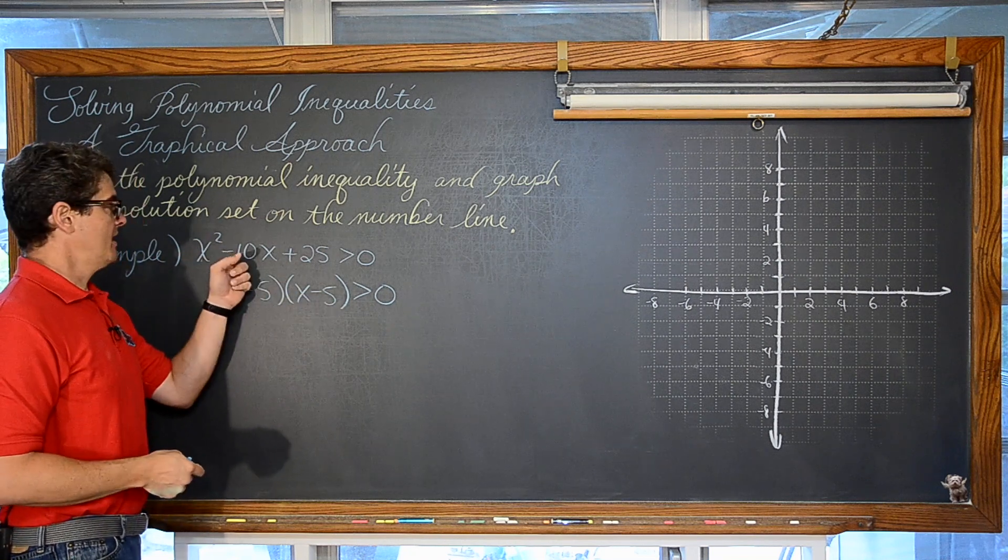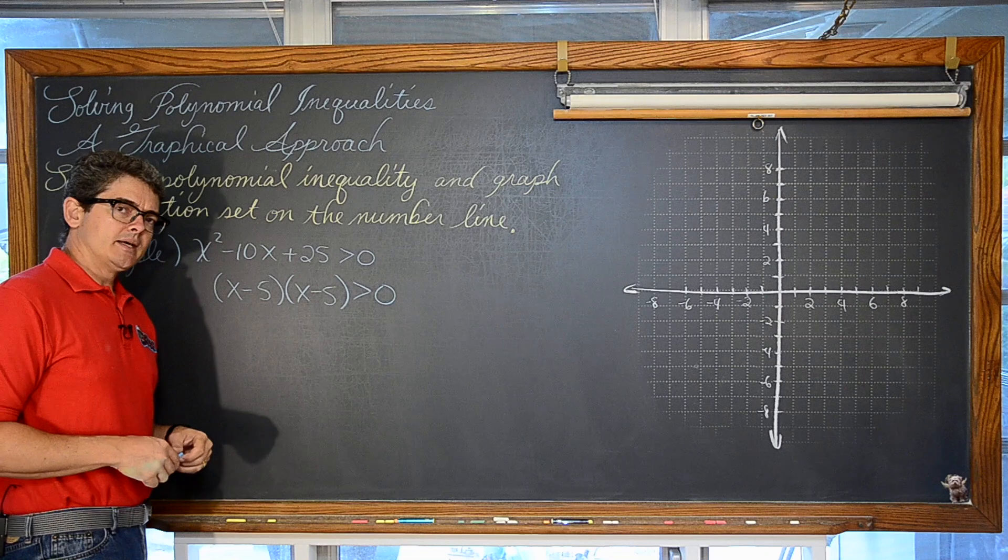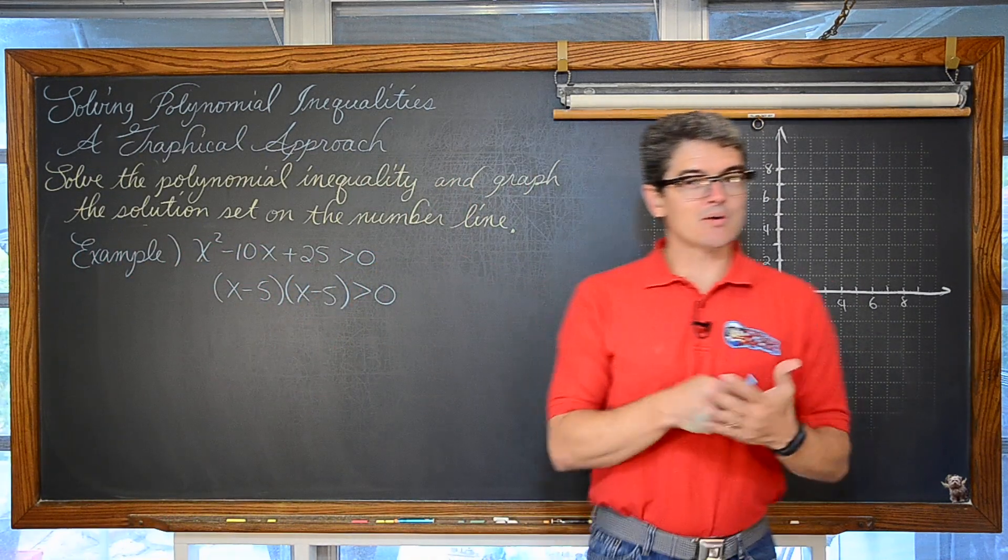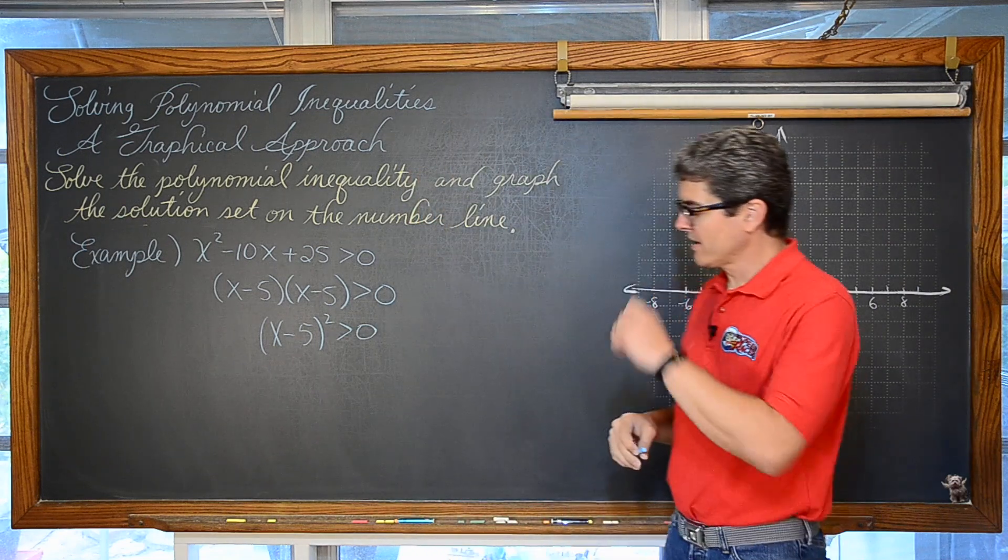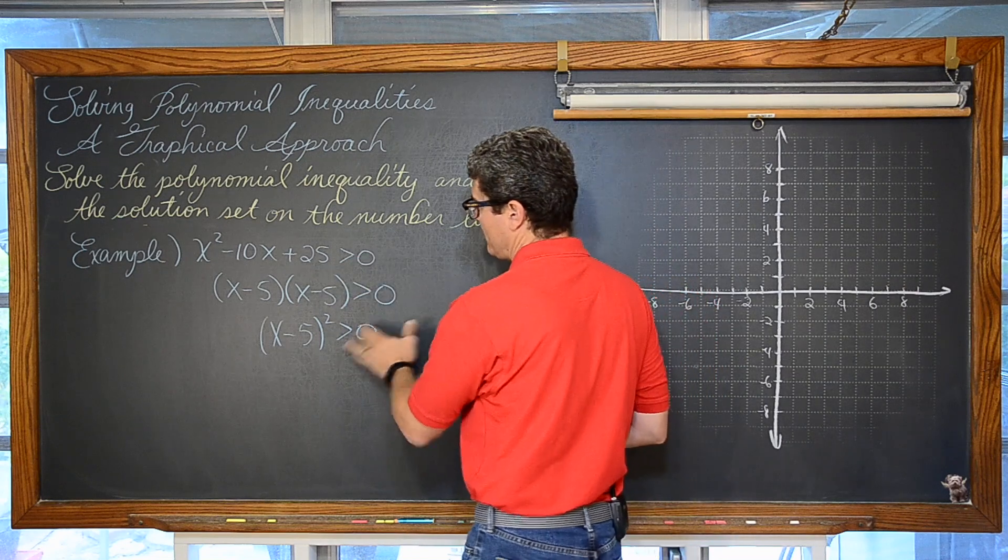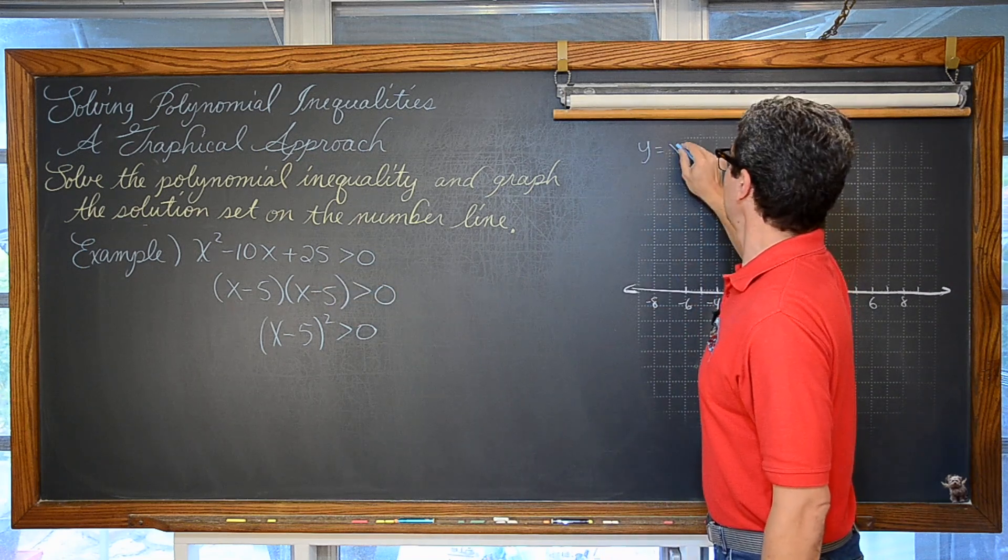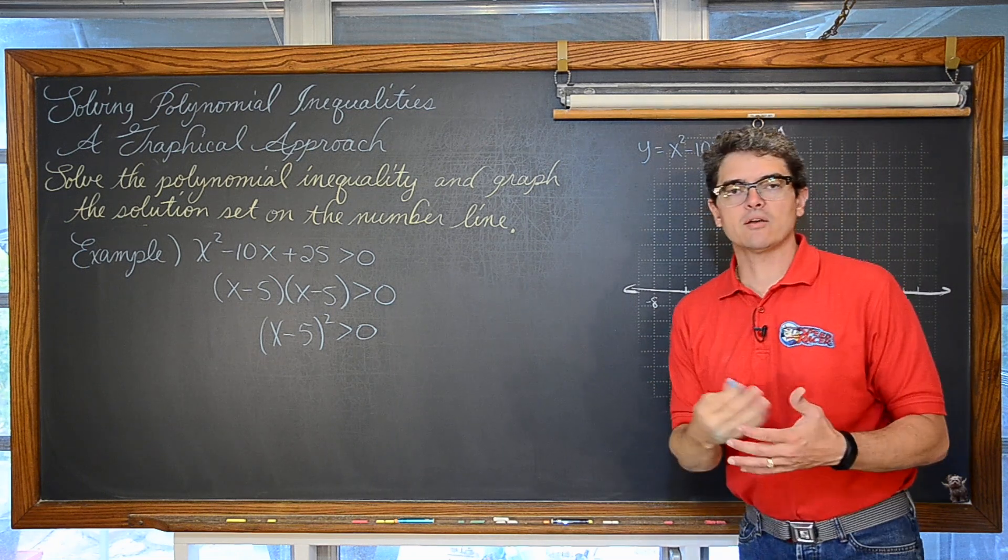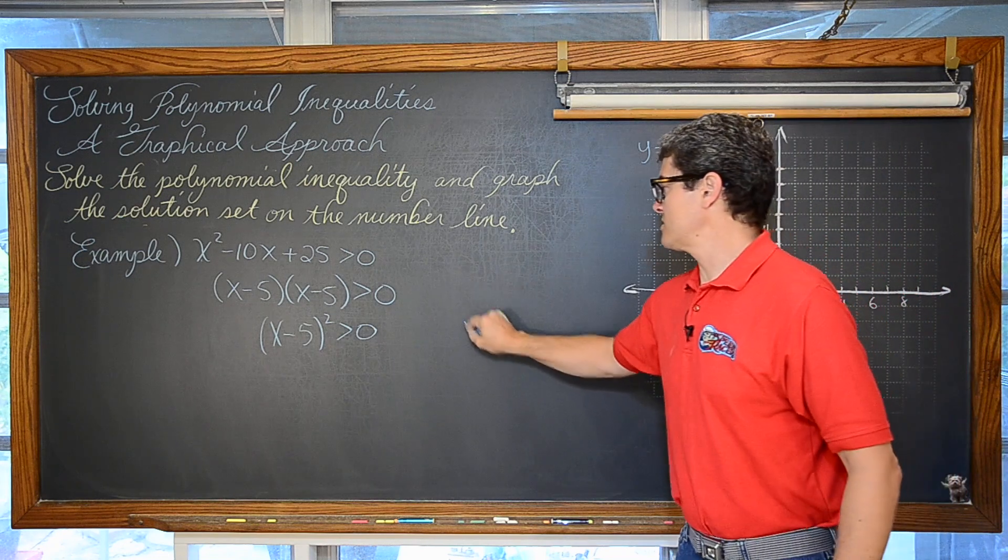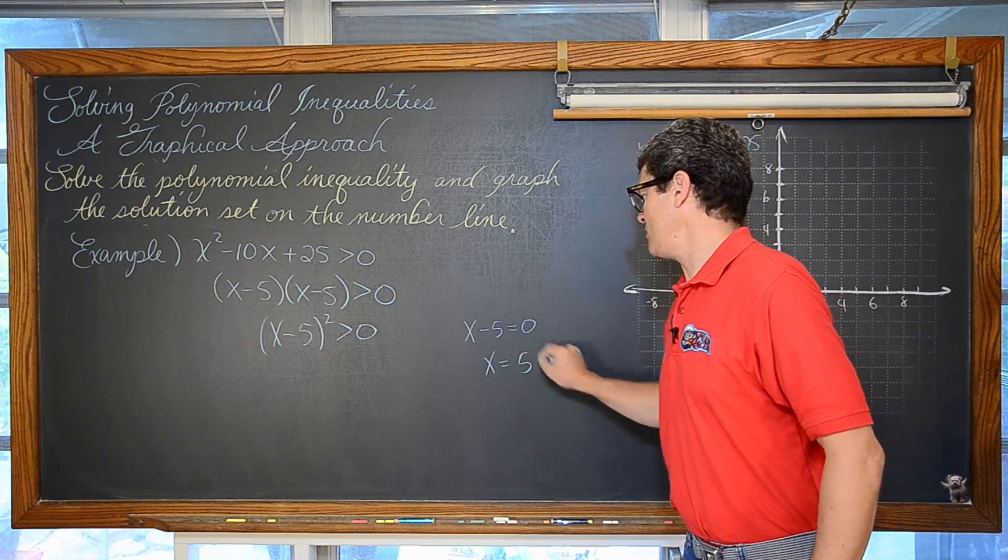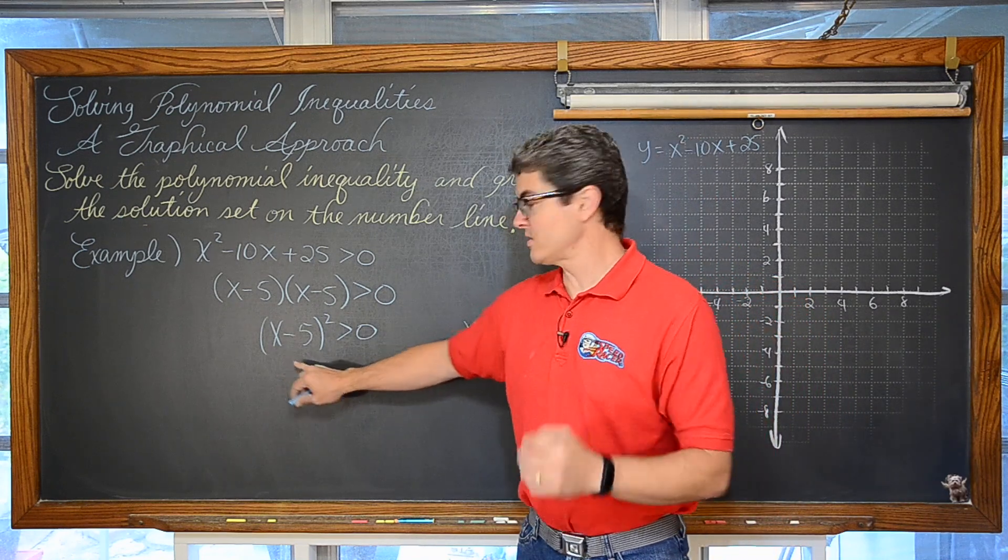x times x is x squared. We have x times negative 5 and another negative 5x gives us negative 10x when you add them. And of course negative 5 times negative 5 is positive 25. Now, I wrote each of those factors only once but they are the same factor. So I could write this as x minus 5 squared. And, again, though this is, we are looking for an inequality where it is just greater than zero. If we are thinking about graphing y is equal to x squared minus 10x plus 25 and using that graph to help us finish this solution of this polynomial inequality, then we need the x intercept. So where is x minus 5 equal to zero? Of course, that is going to be x equals 5. We have here this x intercept, the zero, is coming from a factor which shows up twice.